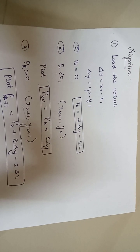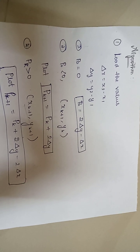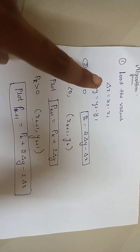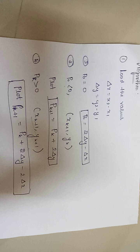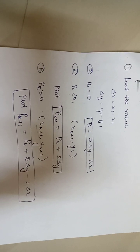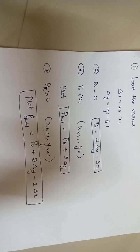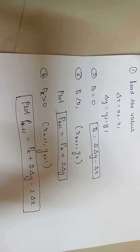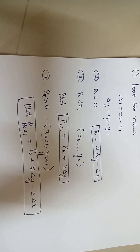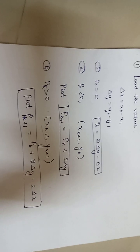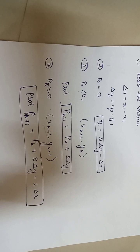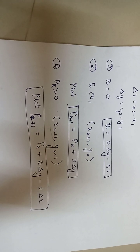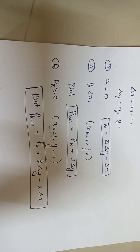After writing the definition, continue with the algorithm. The first step is to load the values: find Δx, which is simply x2 minus x1, and Δy, which is y2 minus y1. Then find P0 — if P0 is equal to 0, use the formula P0 = 2Δy minus Δx.